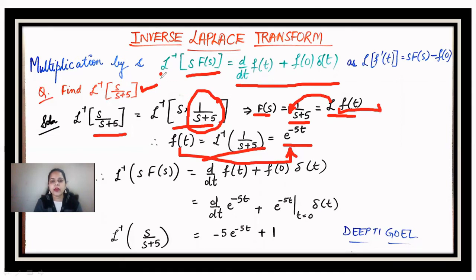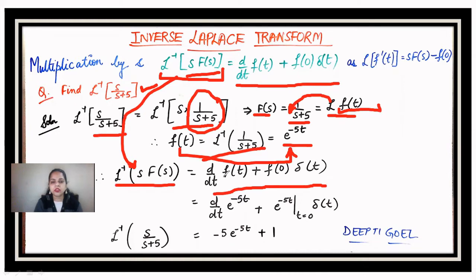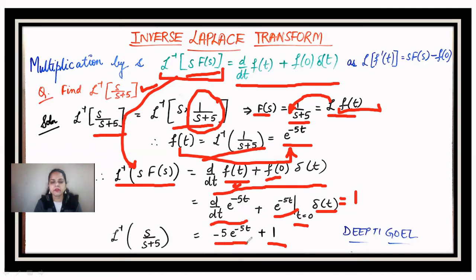Now we evaluate the Laplace inverse of s·F(s) using the formula: d/dt[f(t)] + f(0)·δ(t). Substituting f(t) = e^(−5t), we differentiate to get −5e^(−5t), and f(0) = e^0 = 1. So the answer is −5e^(−5t) + δ(t). This gives the Laplace inverse of s/(s+5).